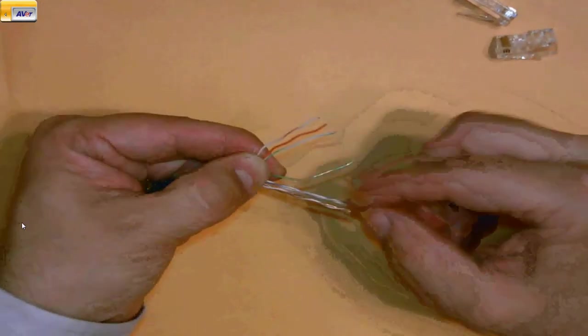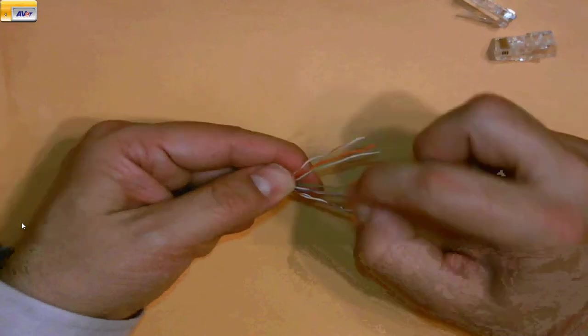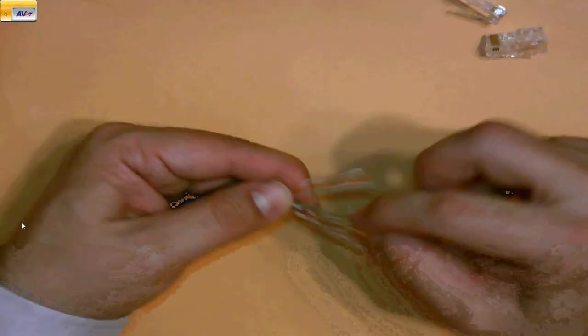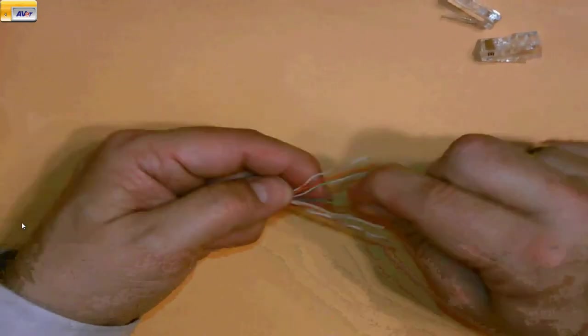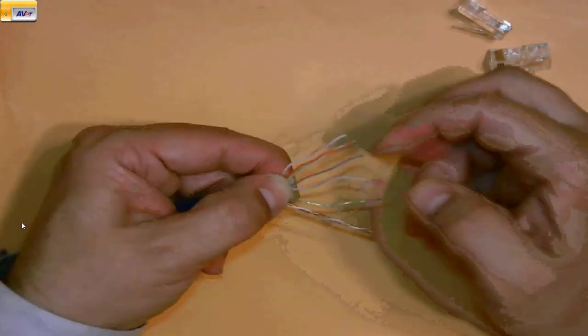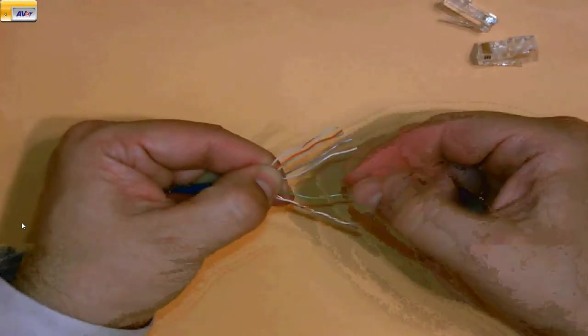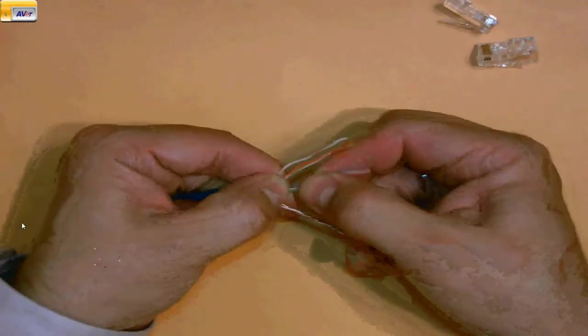And next comes blue. Why not green? Well, blue is always line one in your phone. If you take apart your phone jack at home, and ask permission first, if you take apart your phone jack at home, you'll notice that the middle two are blue and white. And the next set out are green and white.